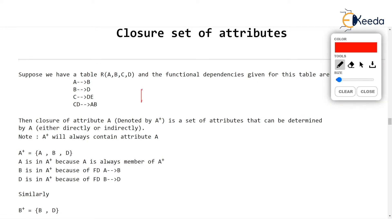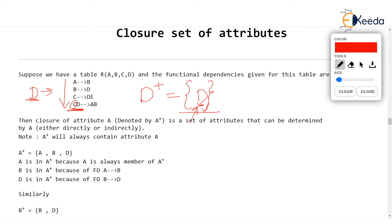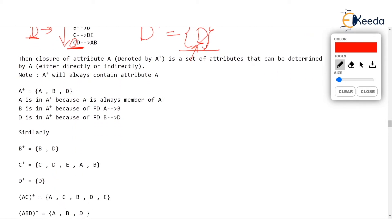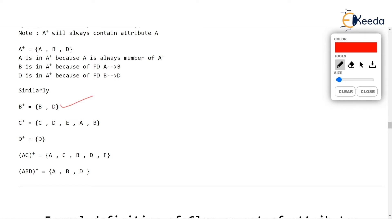Let's find D+. D+ will contain D. For D to bring anything more into the closure, the left-hand side should contain only D derives something. We don't have only D on the left-hand side — we have CD, but C is not in the attribute closure yet. So we can't use that left-hand side. Then D can derive only D. This is the closure of D. So B+ is BD, C+ contains all the attributes making C the candidate key, and D+ contains only D.